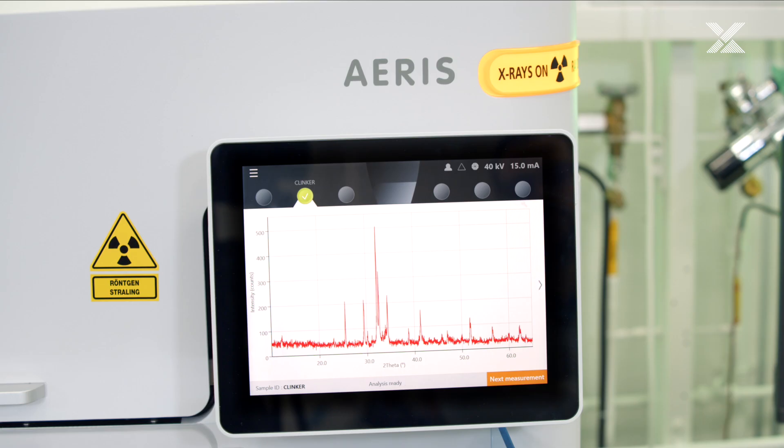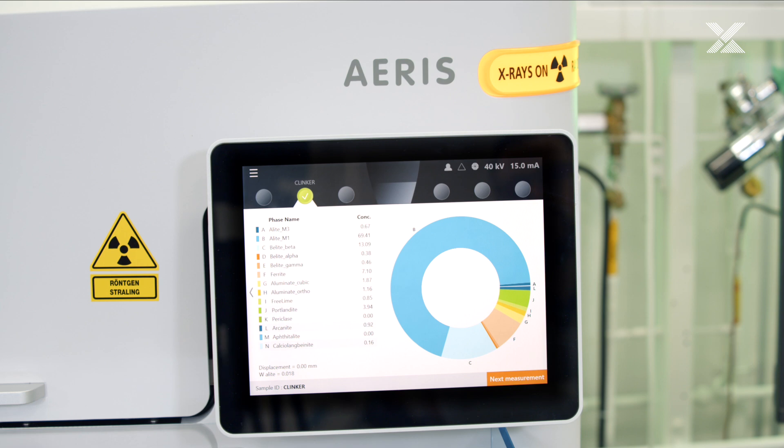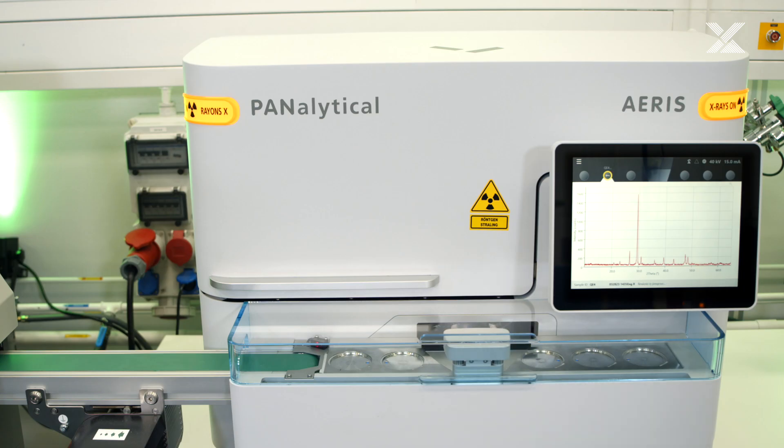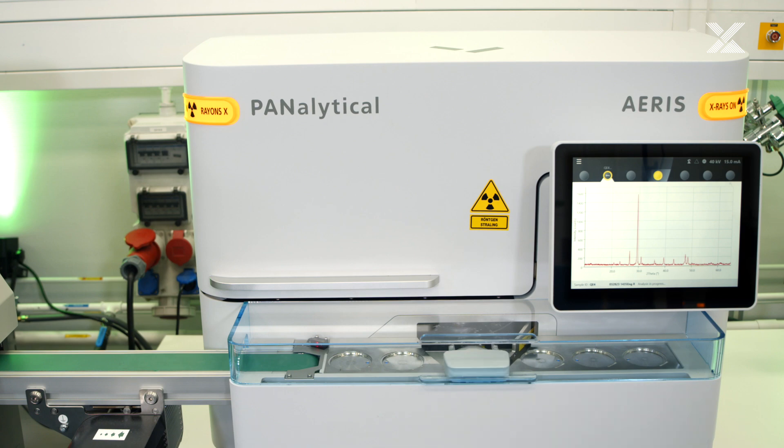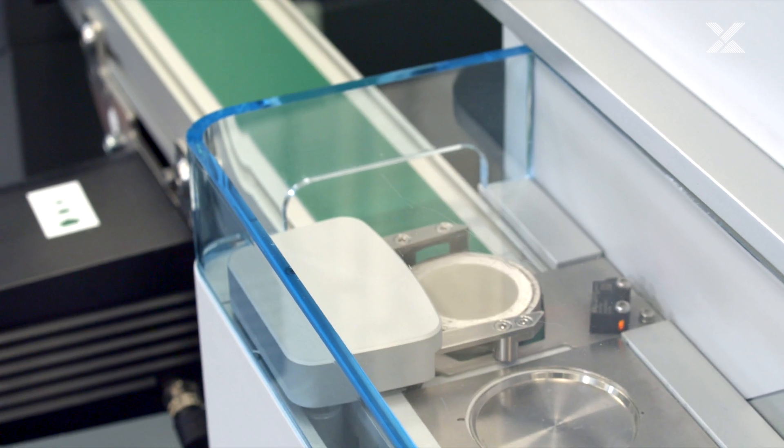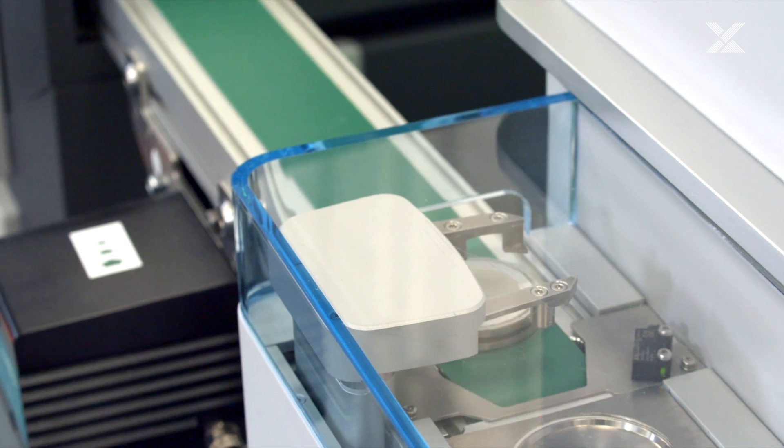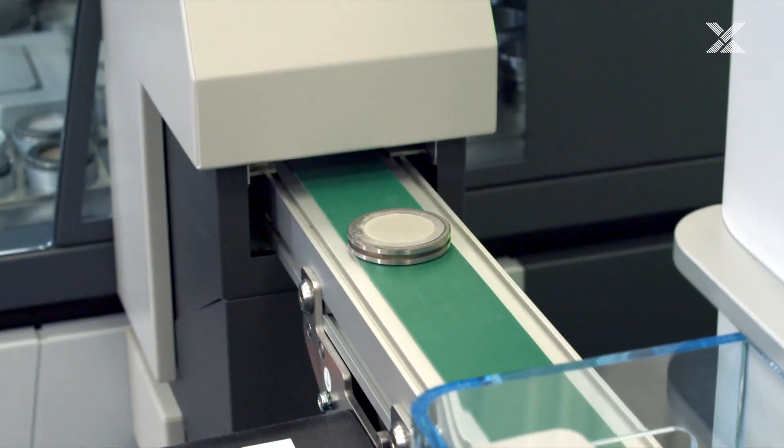It only takes minutes to generate easy to read results. Just like that, the sample is ready to return to the Zetium. Twinned, Eris and Zetium offer full material characterization by combining elemental composition data with phase identification.